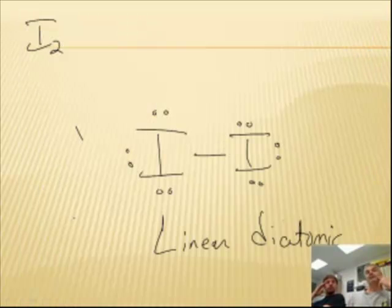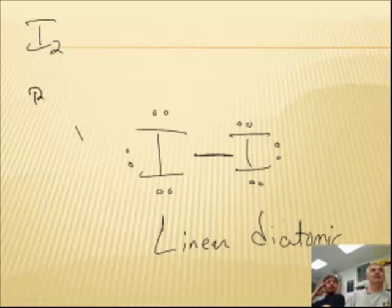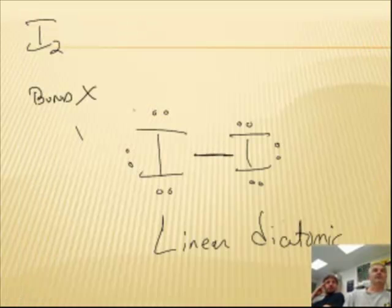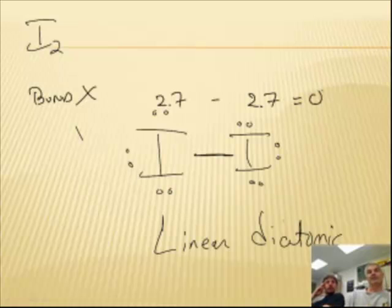And I think we've got a couple more examples. I2. Now this one's linear diatomic, but it's the same atom. The bond check - they're the same. It's 2.7, but 2.7 minus 2.7 is zero. And when it's bonded to itself is not polar. So it doesn't pass that test.